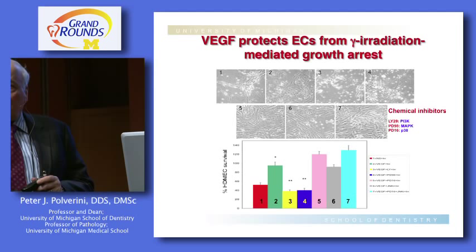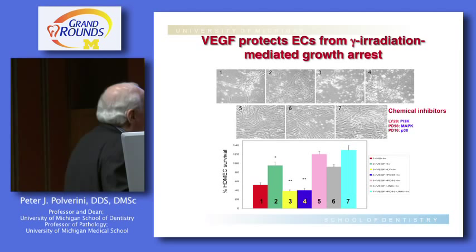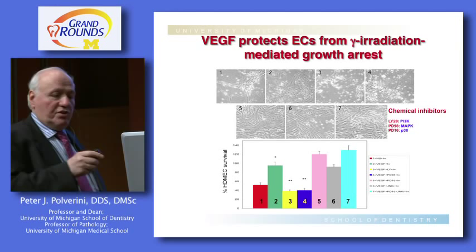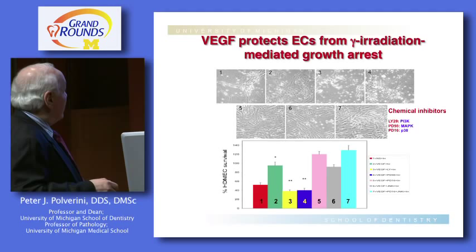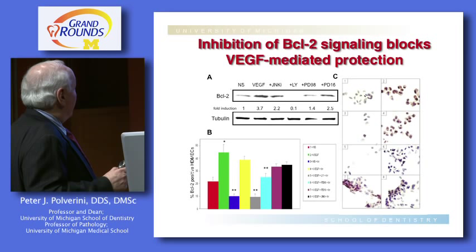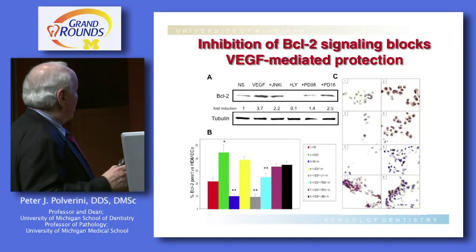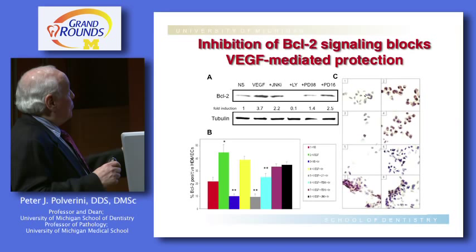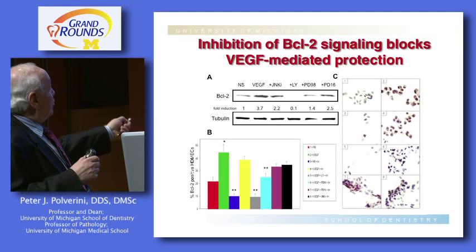We were able to show this was linked to expression of the survival protein BCL2. When using signaling inhibitors blocking different pathway components, exposing endothelial cells to BCL2 increases BCL2-positive vessels, but using inhibitors of VEGF and BCL2 reverts them back to an untreated appearance. When you block PI3 kinase, you interfere not only with VEGF expression but most importantly block expression of BCL2. So we were able to link VEGF through a signaling pathway to BCL2.